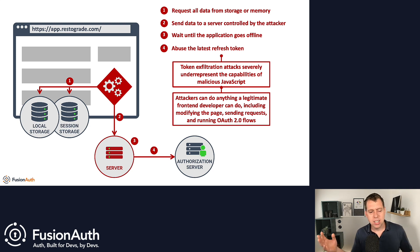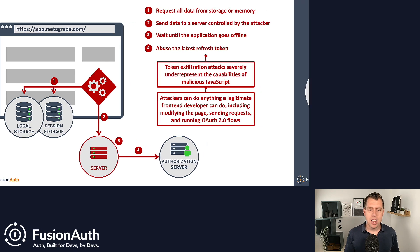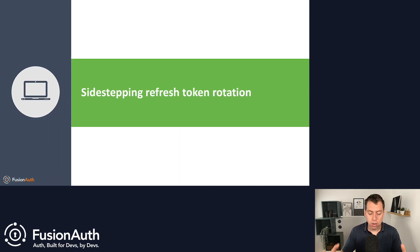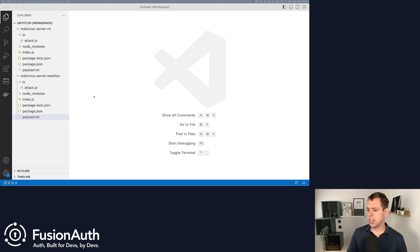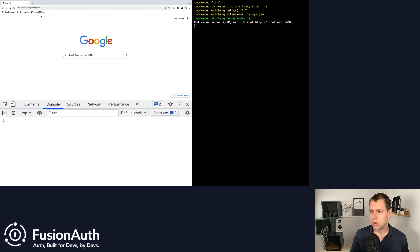Showing this on a slide is one thing, but a real-world demo is much more effective. I'm going to walk through refresh token rotation and show you how an attacker can bypass that. Let's take a look at our demo application. I have a RestorGrade app. Disclaimer — I'm not a great designer, so it looks rough, but the demo does work.